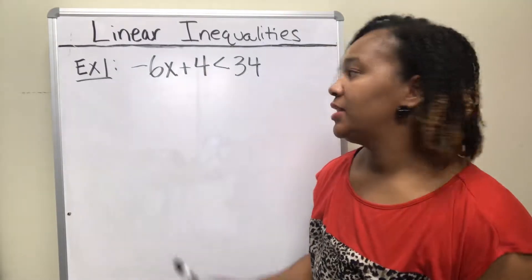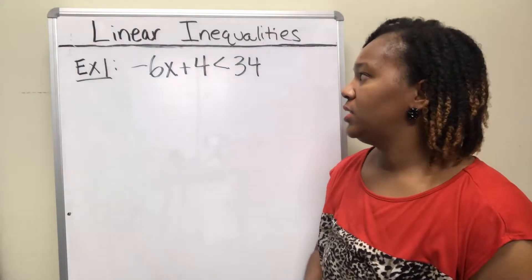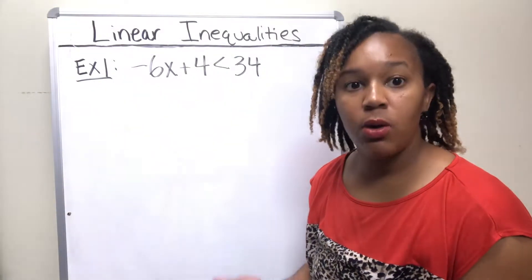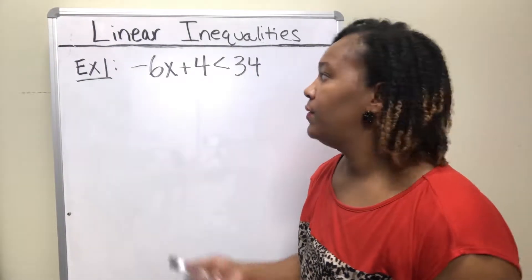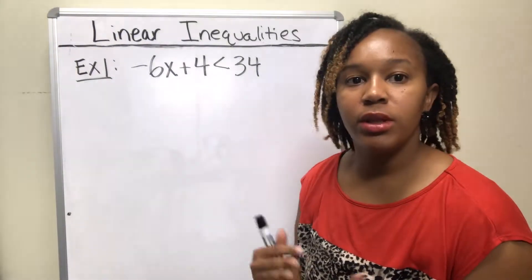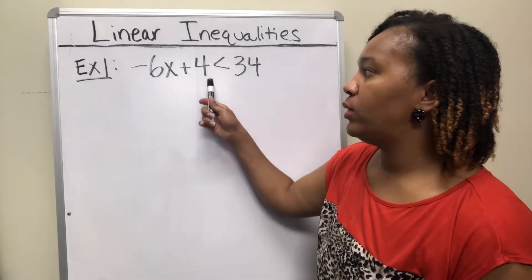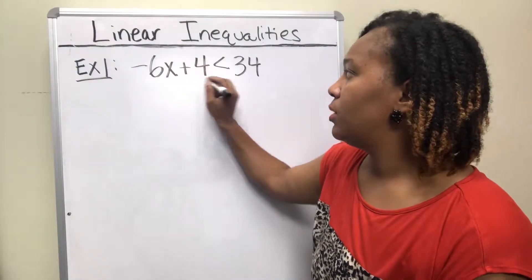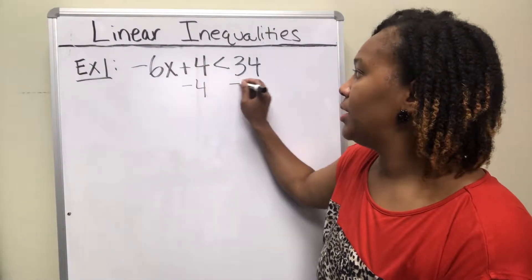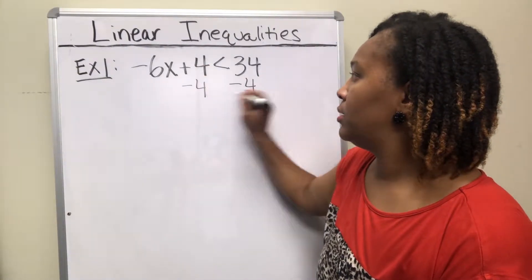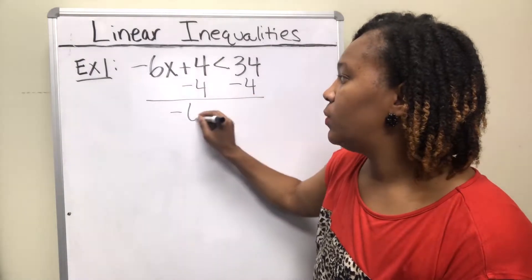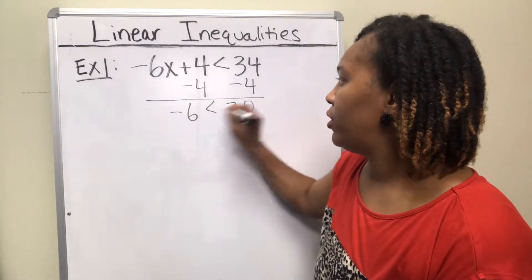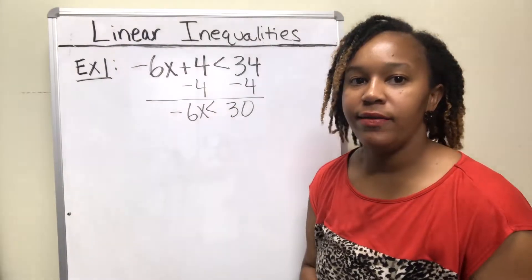Example one: we want to solve the linear inequality negative 6x plus 4 is less than 34. The goal is to get the variable on the side by itself. So just like with a linear equation, you would want to get rid of this 4 first, followed by this negative 6. To get rid of 4, you subtract 4 from both sides. At each step, ask yourself: did you multiply or divide by a negative number?